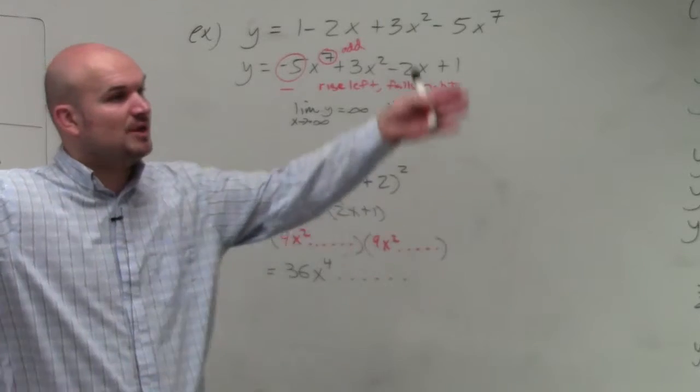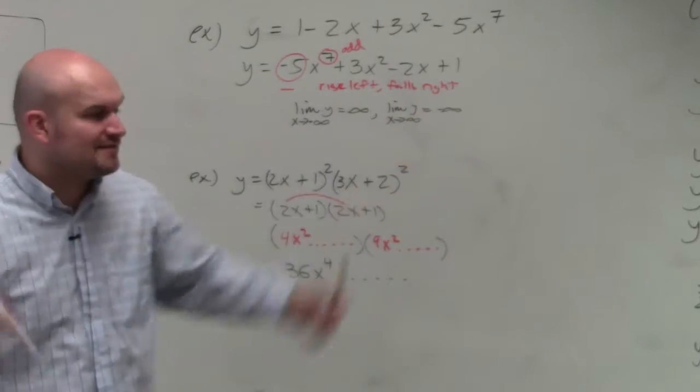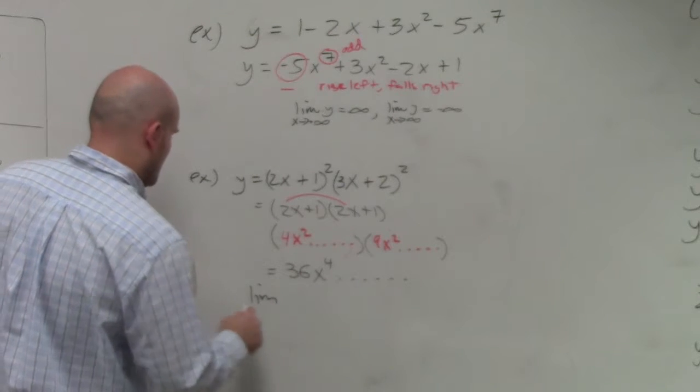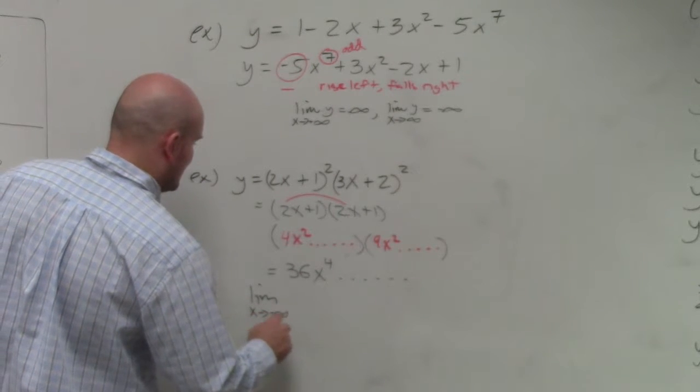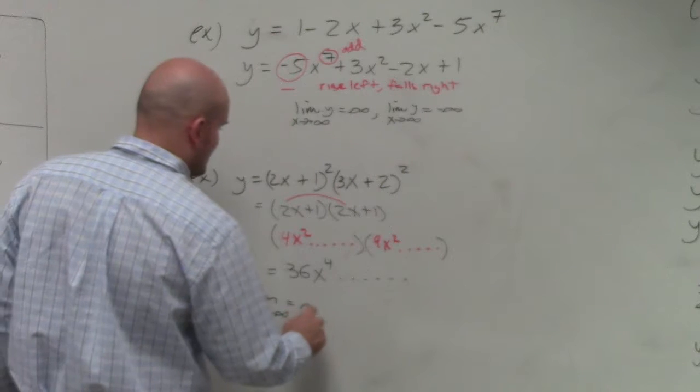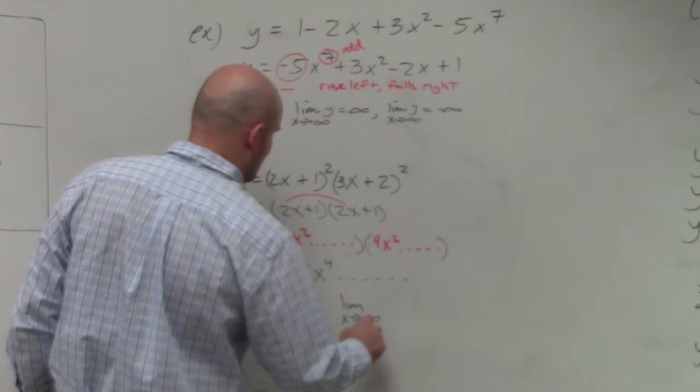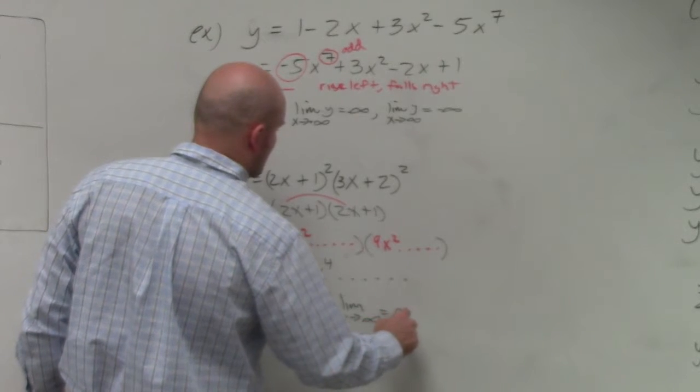That means it looks just like a parabola opening up. So therefore, it's rise left, rise right. So I'll write limit as x approaches negative infinity, it goes to infinity. And the limit as x approaches positive infinity, goes to infinity.